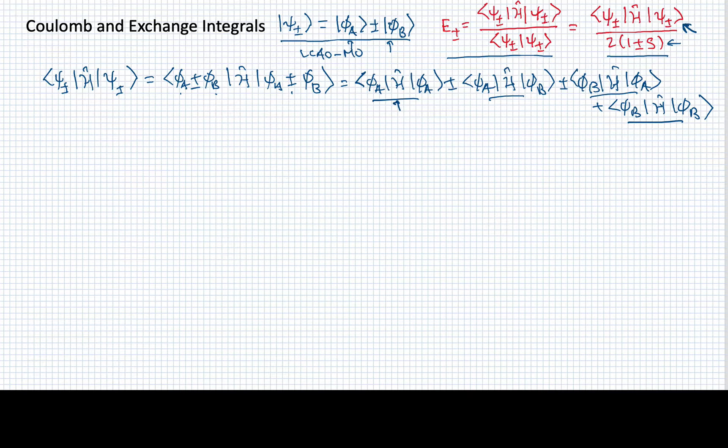Now what we need to do is fill in what is the form of the Hamiltonian. Let's first evaluate what the Hamiltonian operating on phi A might be. The Hamiltonian is minus a half del squared minus 1 over RA minus 1 over RB plus 1 over R, all of this operating on phi A. This part here would just be the Hamiltonian for that given atom, in this case a hydrogen atom.